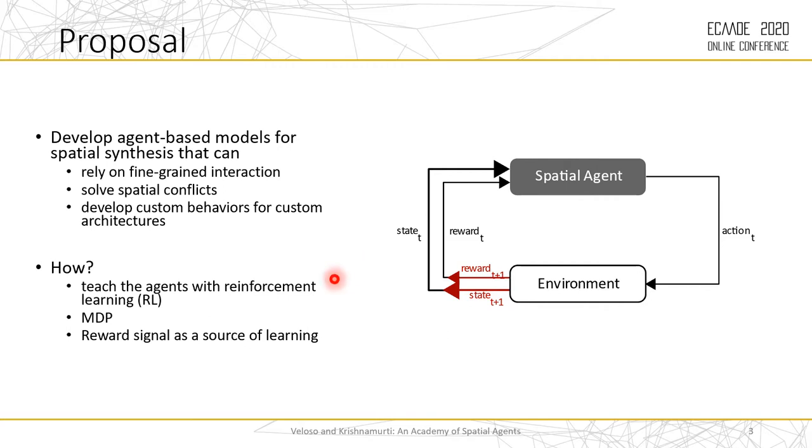Our approach is to use a branch of machine learning called reinforcement learning. In reinforcement learning you can encode a goal, in our case spatial goals, as a reward signal. So in the interaction between agent and environment, the environment can send a reward signal. The agent is able to learn how to select actions, how to behave in order to maximize future cumulative rewards.